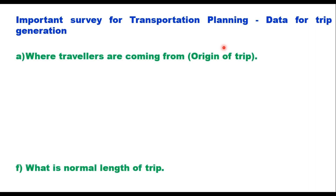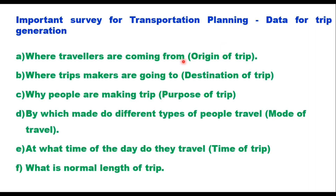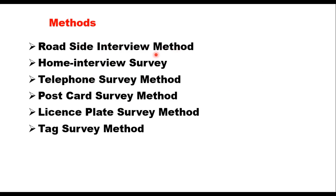These studies are very important in transportation planning because they provide data for trip generation. These surveys collect information like: where travelers are coming from (origin of the trip), where trip makers are going (destination of the trip), why people are making the trip (purpose of the trip), by which mode different types of people travel, at what time of the day they travel, and what is the normal length of the trip.